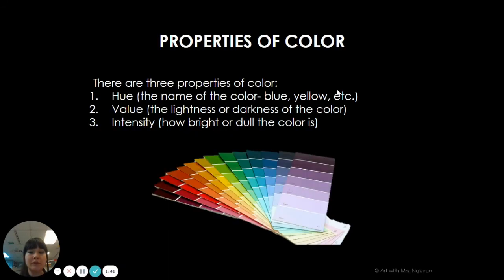There are three different parts of color. One is hue — that's the name of the color, like blue or yellow. The second one is value, which refers to light colors and dark colors. The third one is intensity, which means bright colors and dull colors.